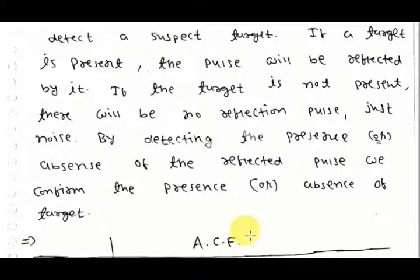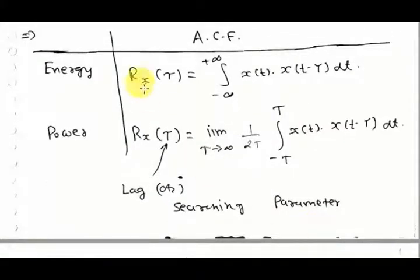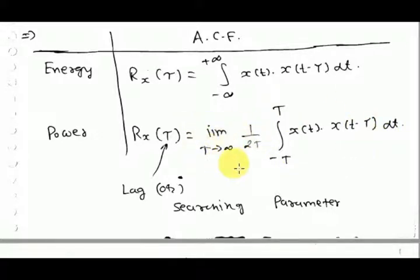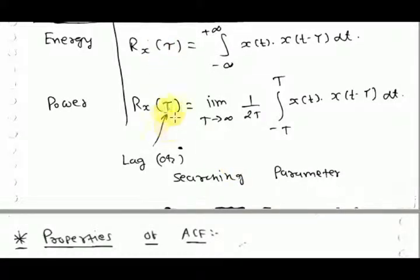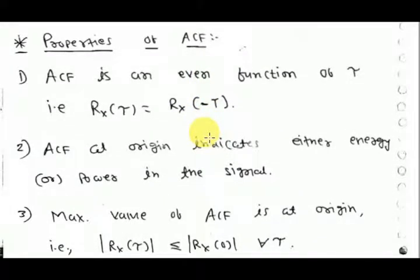The formula for autocorrelation function is the integration from minus infinity to plus infinity of x(t) times x(t minus tau) dt for an energy signal. For a power signal, the limit T tends to infinity with a 1 over 2T factor is used. Tau is called the searching parameter or lag parameter.